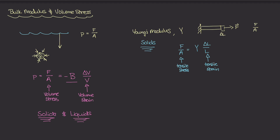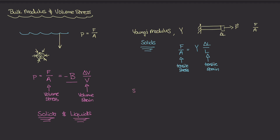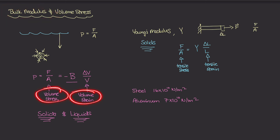Young's modulus really only applies to solids — you can't technically stretch liquids in the way expressed in that relationship. Finally, the smaller the bulk modulus, the softer the material. Steel has a bulk modulus of 16 times 10 to the 10th newtons per meter squared, and aluminum has a bulk modulus of 7 times 10 to the 10th newtons per meter squared. Aluminum is a little softer than steel, so aluminum can be compressed more easily. That is bulk modulus and the relationship between volume stress and volume strain. We'll do a couple of examples to understand this relationship.